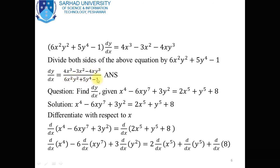Dear students, in implicit differentiation, using the chain rule, you will obtain dy/dx in more than one term. Take common dy/dx from those terms and shift all other terms to the right-hand side; you can easily find dy/dx. For example, another problem: x⁴ − x·y⁷ + 3y² = 2x⁵ + y⁵ + 8.